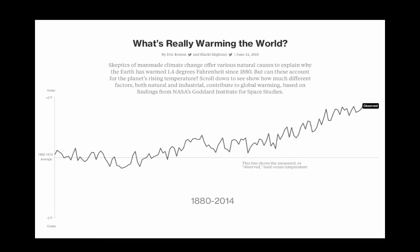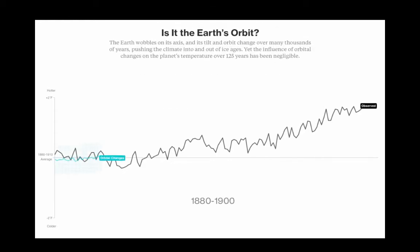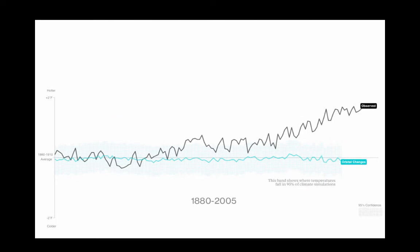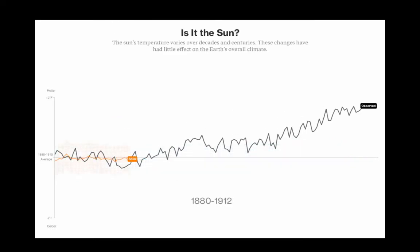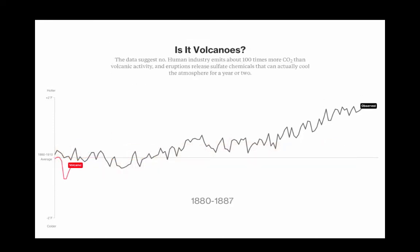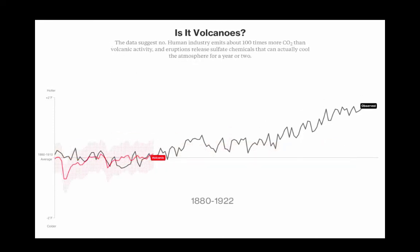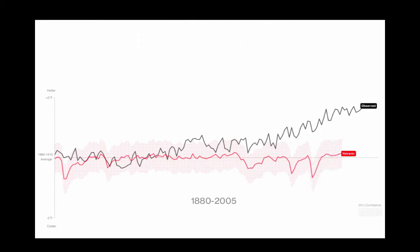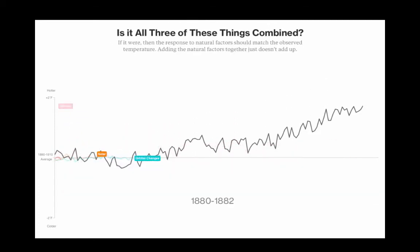We can also use these models and these data sets to attempt an attribution of what's been going on, and this is a product we put together with Bloomberg News. We can take all of the natural forcings — changes in the orbit, changes in the sun, changes in volcanoes — and match them up in their expected fingerprint with the observed change.